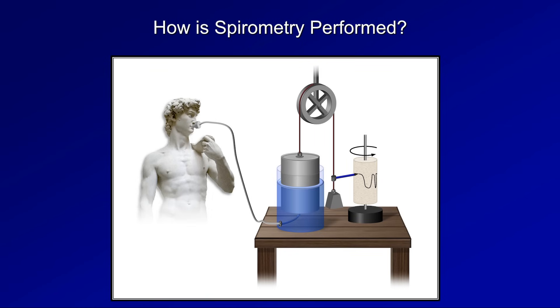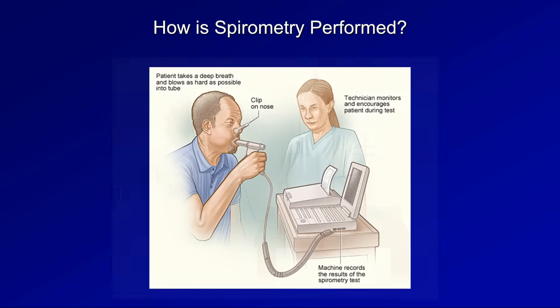Modern spirometers look quite different, with circuits replacing the pulleys and counterweights. The procedure to measure spirometry is very simple: the patient places his or her mouth around the mouthpiece, inhales maximally, and then exhales as fast as possible, continuing to exhale for at least six seconds. The maneuver is repeated at least three times, and the highest lung volumes and highest airflows are recorded, even if those two values come from different attempts.